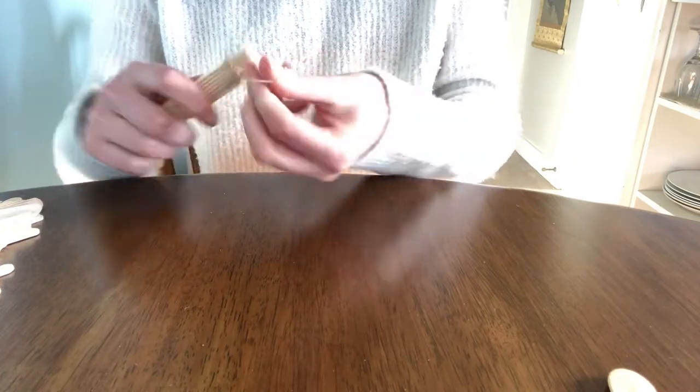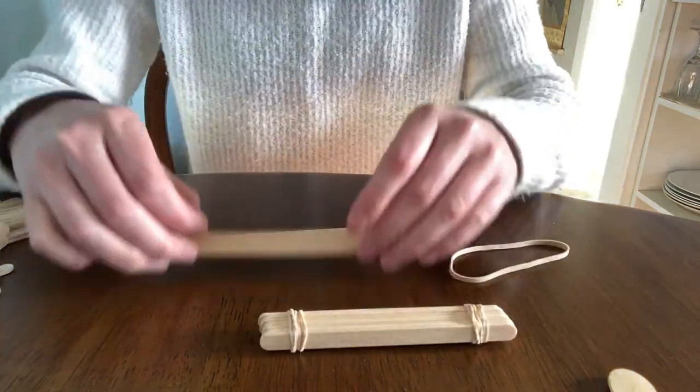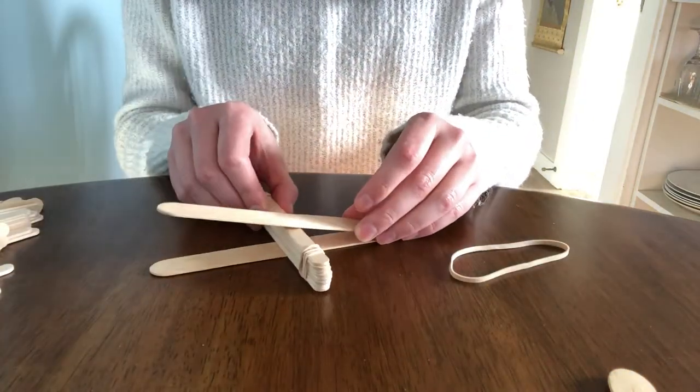First you want to build two different catapults. You can do this by stacking some popsicle sticks and securing them with rubber bands and then placing that stack between two more popsicle sticks and securing one end with the rubber band to make a catapult like this.